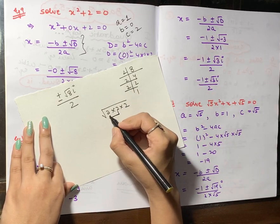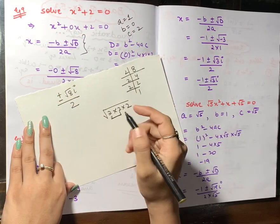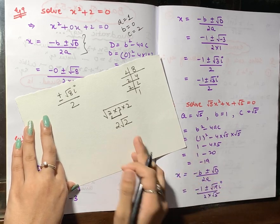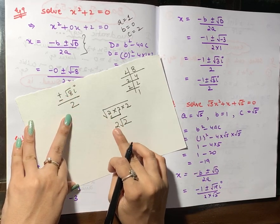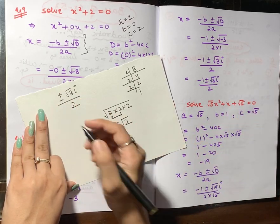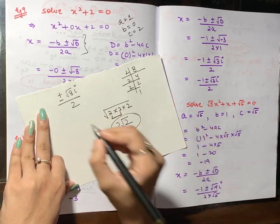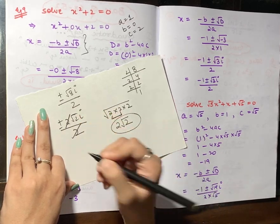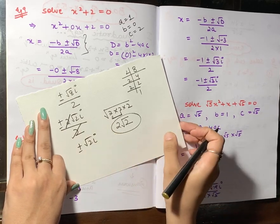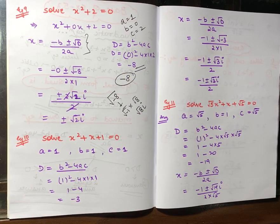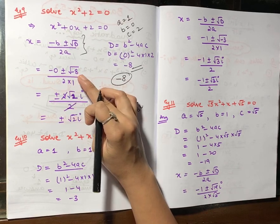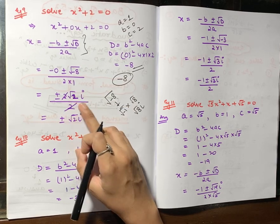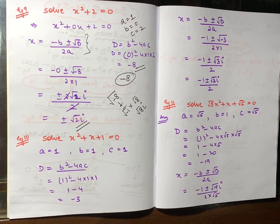So the required answer is x = ±√2 i. I put √(−8) outside as iota, wrote √8 = 2√2, and cancelled the 2 with the denominator. This is your final answer for Example 9.